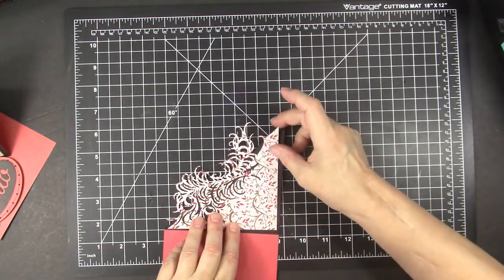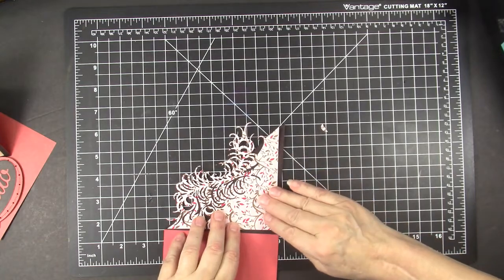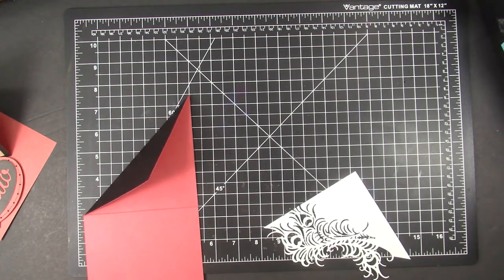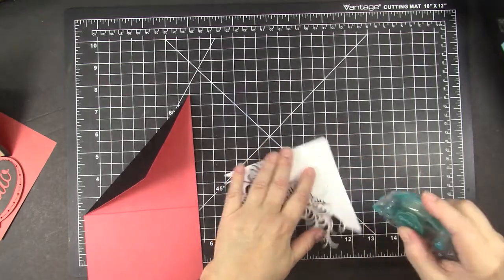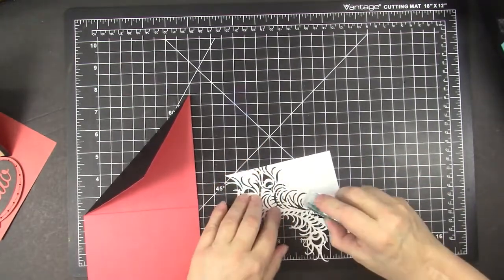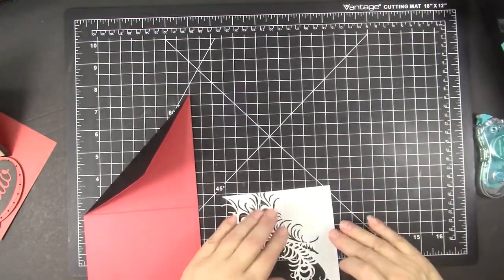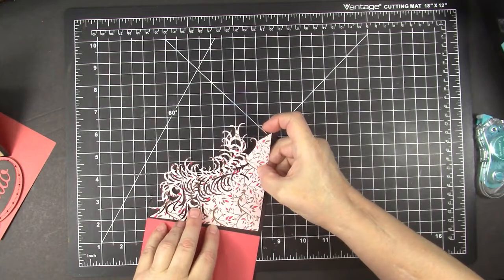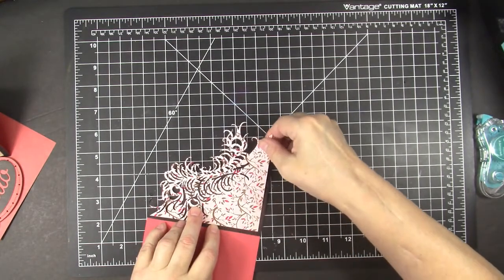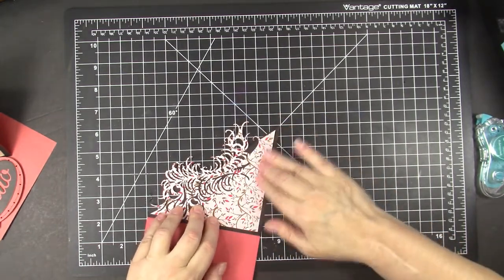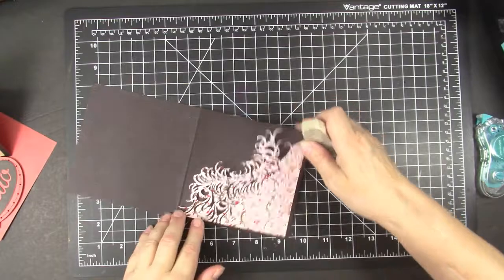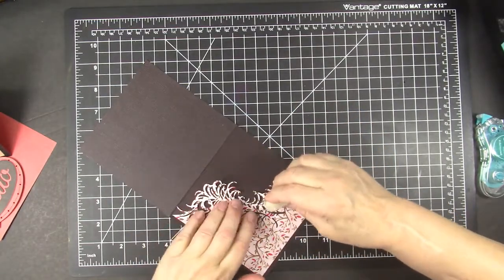So now this should fit on this part. I'm going to start with that line up against the diagonal line. So I'm going to attach that and then I'm going to erase the line that I drew.